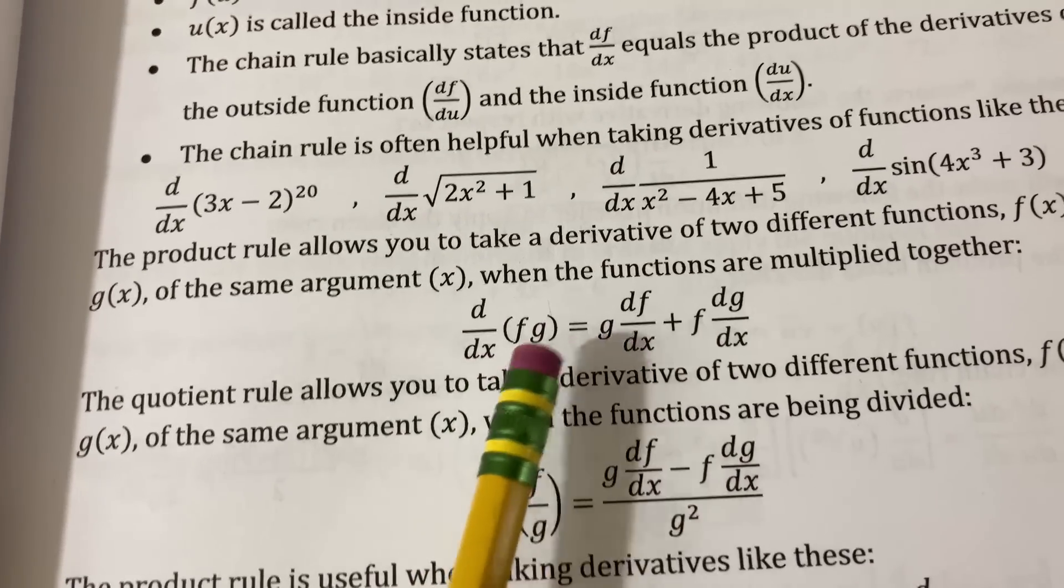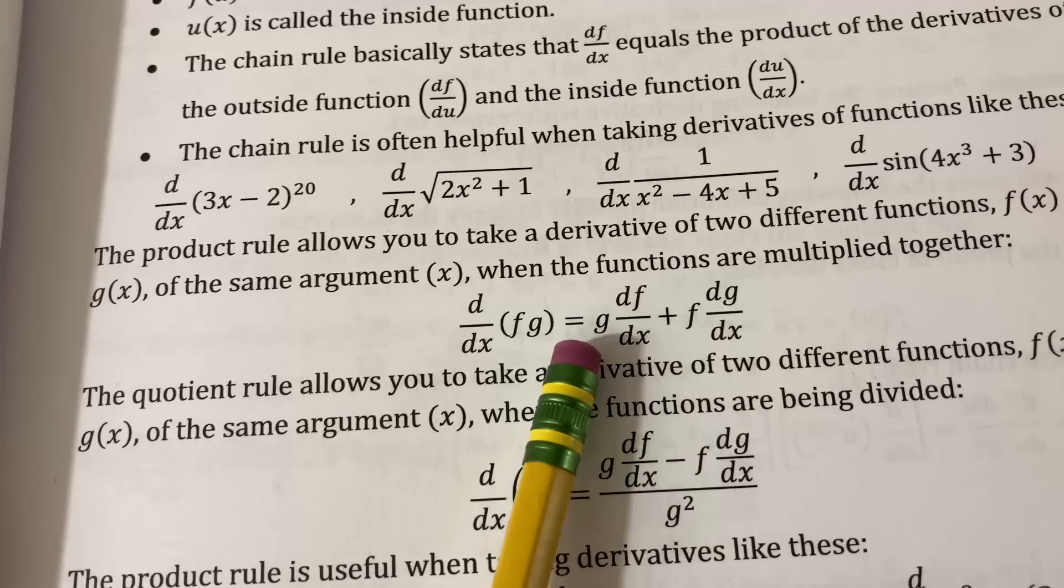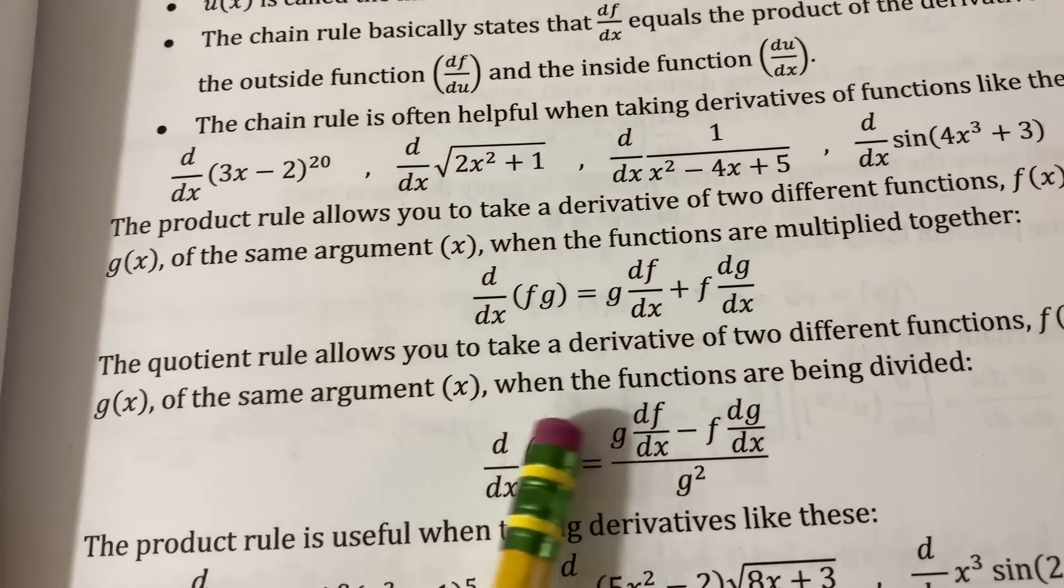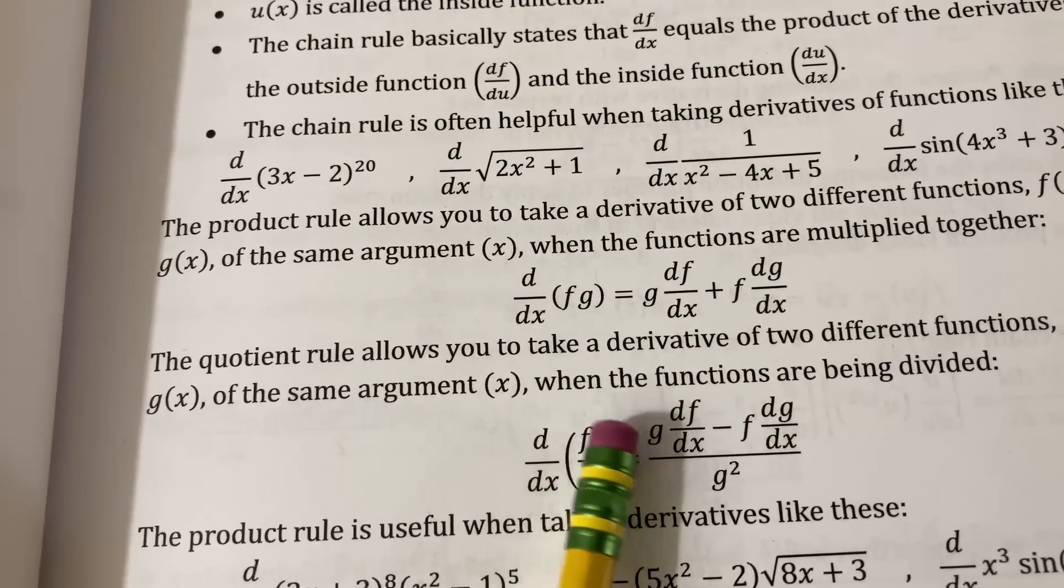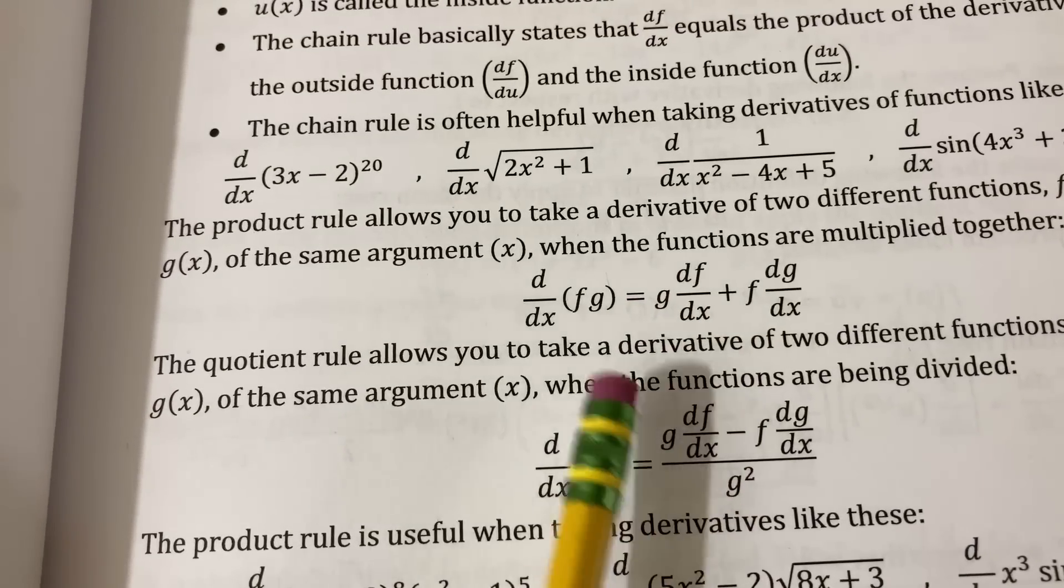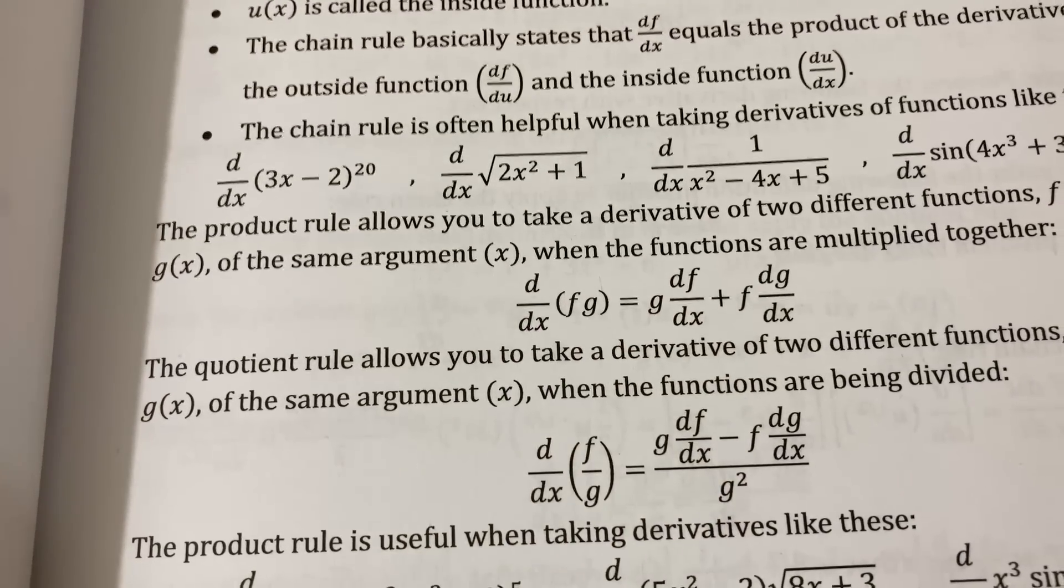A lot of textbooks won't do that. For example, they'll write the product rule with df/dx and g and come down here and write the quotient rule this way, making it harder for people to memorize both rules. So it's good that Chris does keep the consistency. However, I personally do it a little bit different.